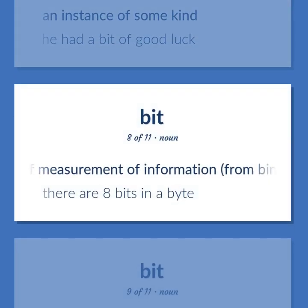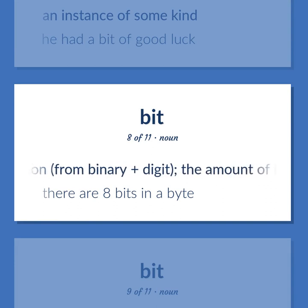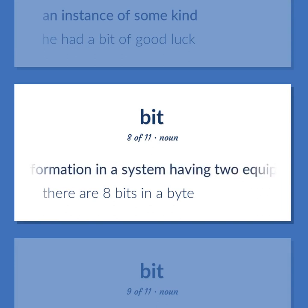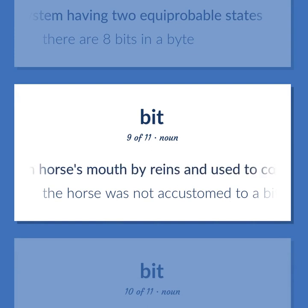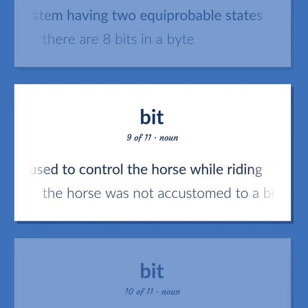A unit of measurement of information, from binary plus digit. The amount of information in a system having two equiprobable states. There are eight bits in a byte. Piece of metal held in a horse's mouth by reins and used to control the horse while riding. The horse was not accustomed to a bit.